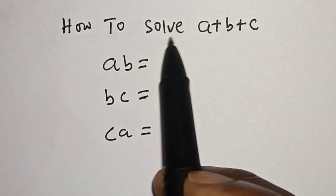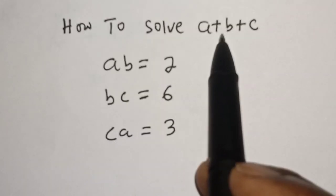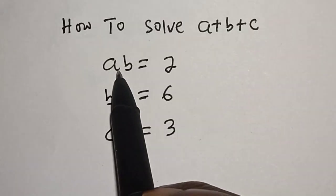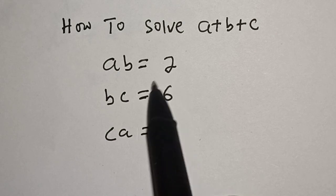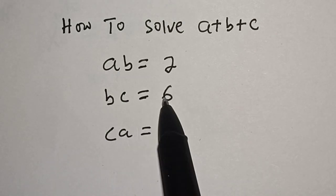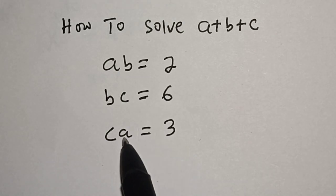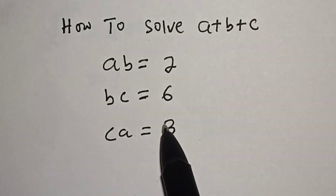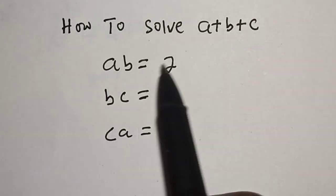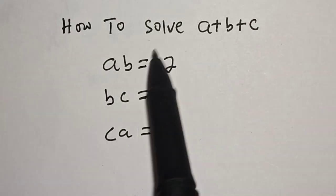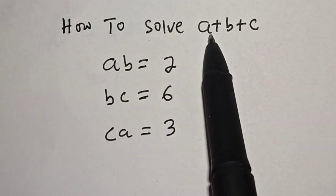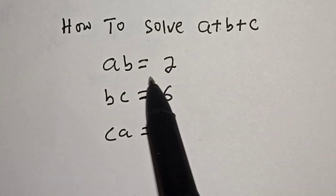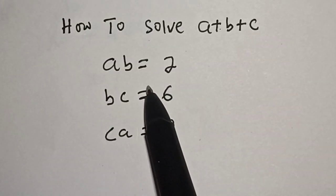How to solve A plus B plus C, if AB is equal to 2, BC is equal to 6, and CA is equal to 3. Hi everyone, welcome to my class. In this class, we want to find the value of A plus B plus C from this given equation.